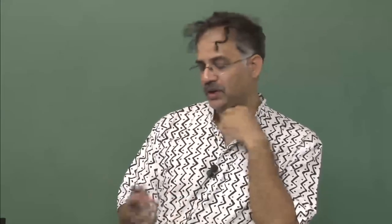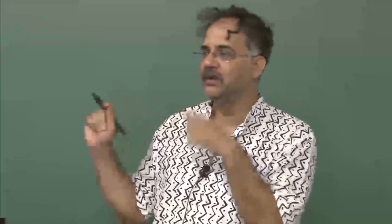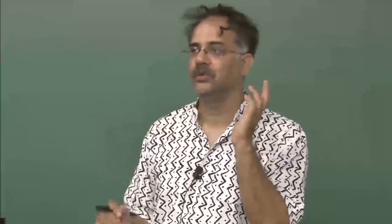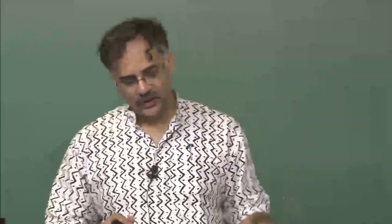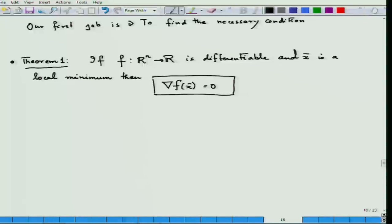You have heard this when n equals 1, when x is from R to R — you studied this in school. If you are given an ordinary function, say x² + 2x + c, and asked to find the minimum, you immediately find the derivative equal to zero, find a point, and proceed. So here, to find the local minimum, we first find a point which satisfies this condition.